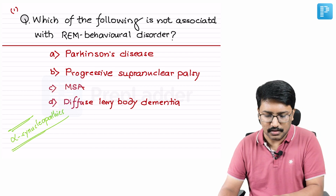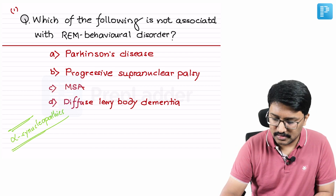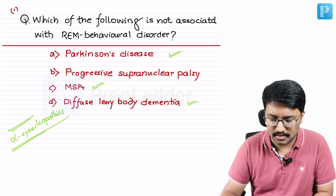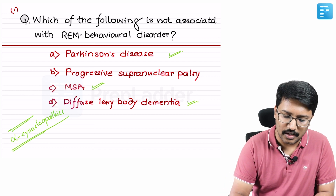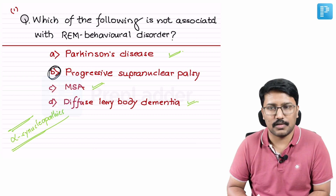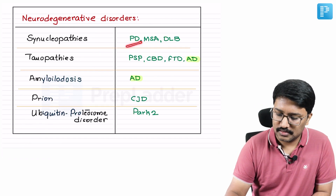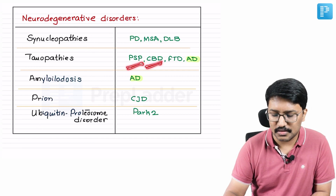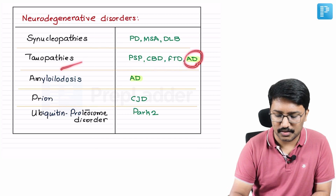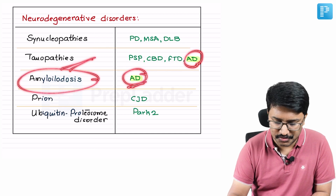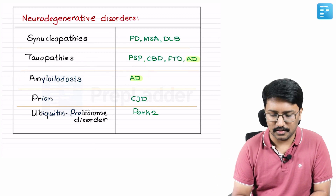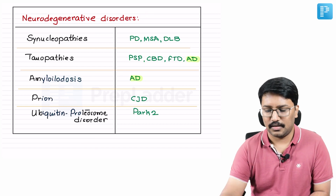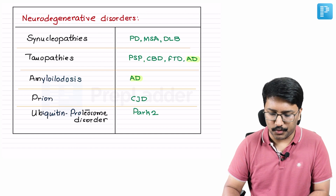REM behavioral disorder is a characteristic finding of alpha-synucleopathies. Parkinson's disease, MSA, and diffuse Lewy body dementia are all alpha-synucleopathies. Progressive supranuclear palsy is a tauopathy — so that becomes the right answer. PSP, corticobasal degeneration, frontotemporal dementia, and Alzheimer's disease are tauopathies. Alzheimer's also has amyloid deposition, so it can also be considered an amyloidopathy.